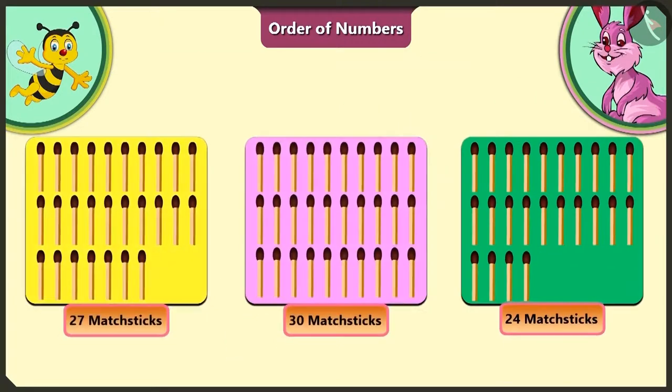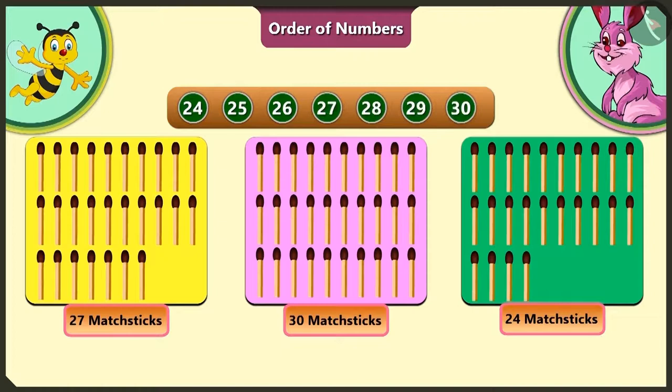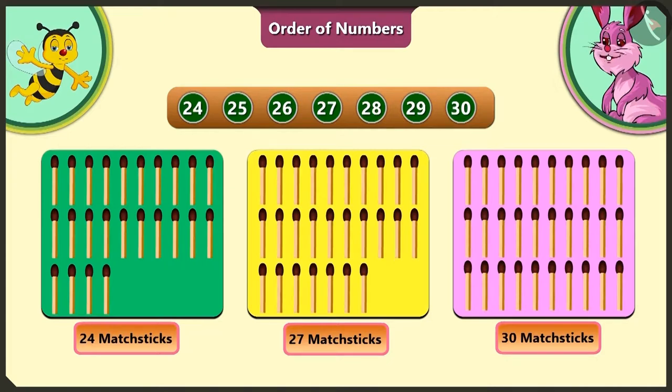So you would have understood that counting in order, we get 24, 25, 26, 27, 28, 29 and 30. Here the green card has the least matchsticks and the pink card has the maximum number of matchsticks. So if we have to arrange them in order from small to big, we will place the green card ahead of all, then the yellow card and the pink card in the end.